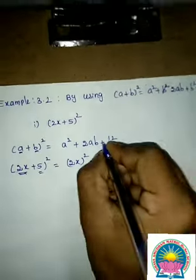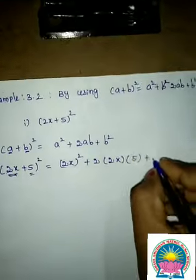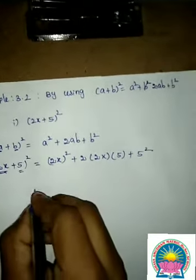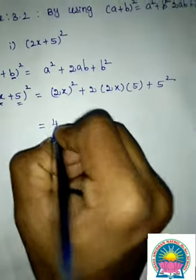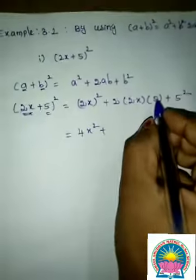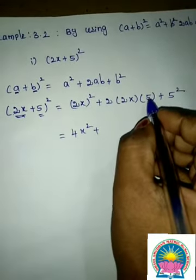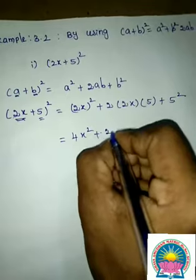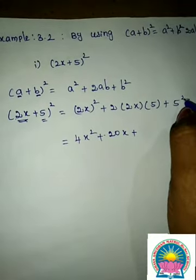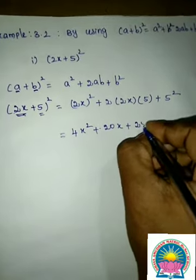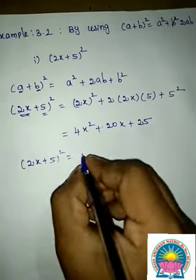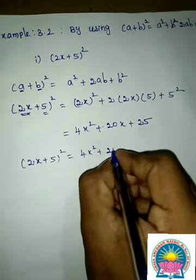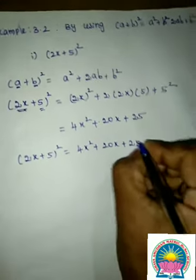b² = 5² = 25. So, (2x)² = 4x², and 2 × 2x × 5 = 20x. Therefore, (2x + 5)² = 4x² + 20x + 25.